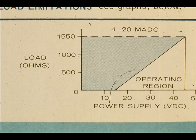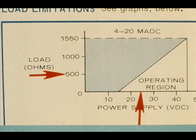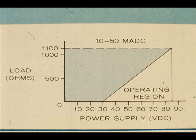The DC power supply required to operate the transmitter is dependent on the resistance in the circuit. The 4 to 20 milliampere circuit will operate from 14 volts DC with no load up to 45 volts DC with a 1,550-ohm load. With a 24-volt DC supply, the maximum load is approximately 500 ohms. The 10 to 50 milliampere circuit requires higher DC voltages.